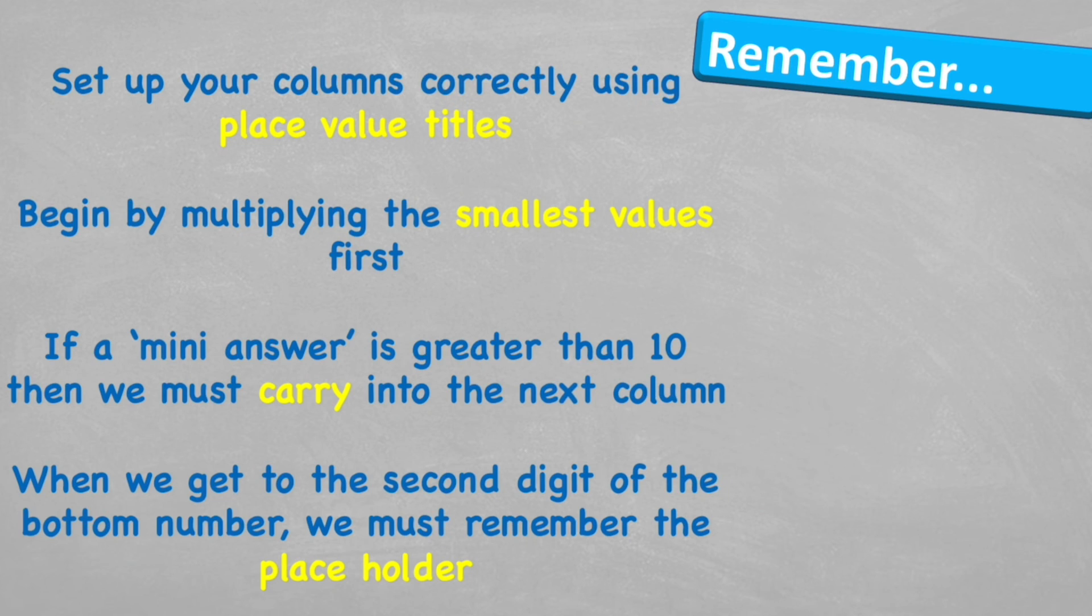Let's look at what to remember. Set up your columns correctly using the place value titles. Begin by multiplying by the smallest values first. If a mini answer is greater than 10, then we must carry it into the next column. When we get to the second digit of the bottom number, we must include a placeholder.